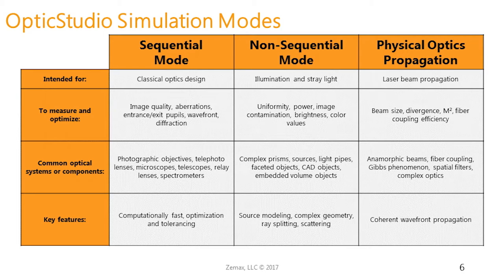The key features of each mode: sequential mode is very computationally fast — rays are traced very systematically, making both optimization and tolerancing very fast. In non-sequential mode, we can model realistic sources using real measured source data, model complex geometries, and very importantly, model both ray splitting and scattering. In physical optics propagation, you get the full coherent wavefront propagation throughout the system.